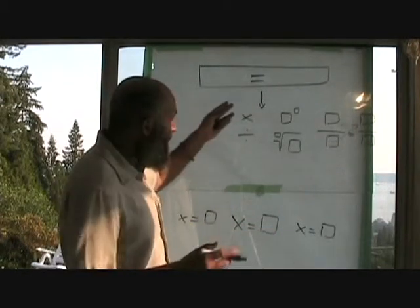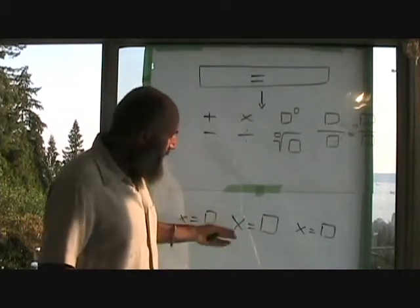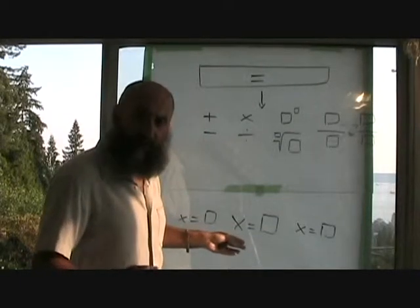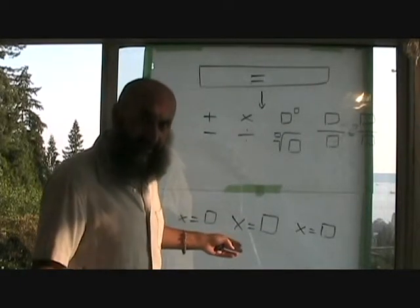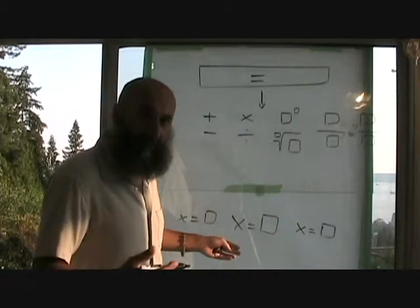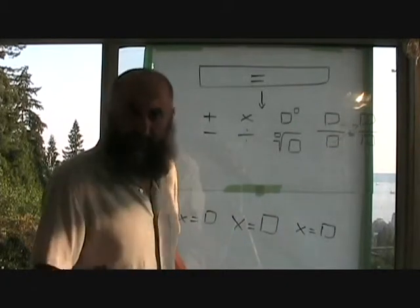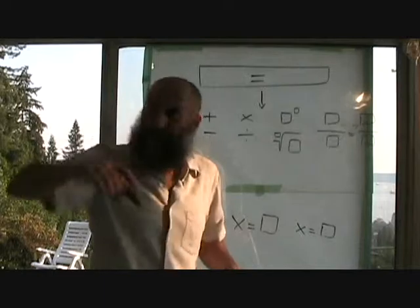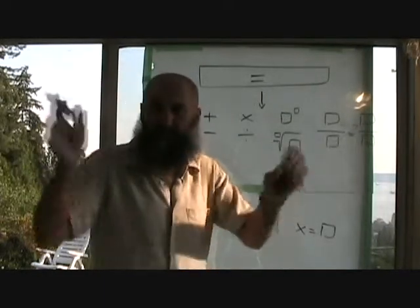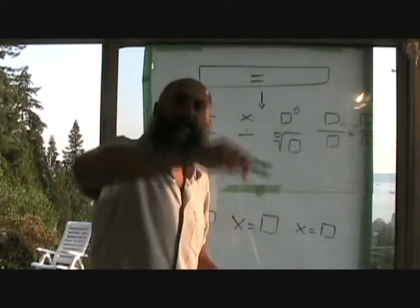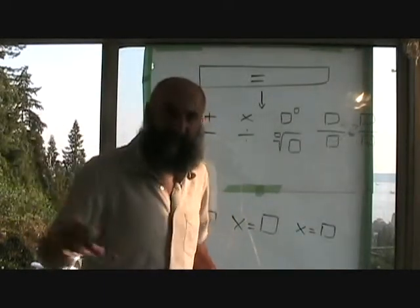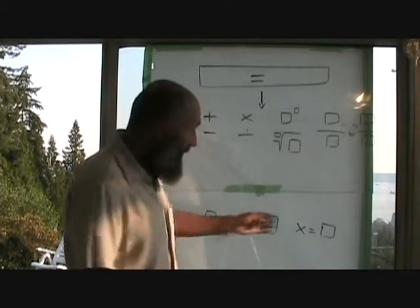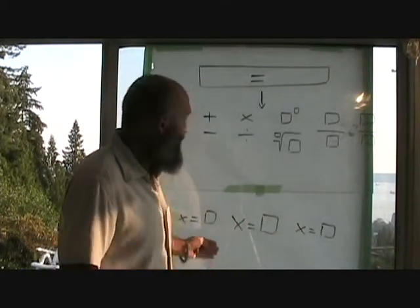If you remember, we talked about this — solutions are basically where the function crosses the x-axis, where y is equal to zero. A complex function — it would make sense — if a function is doing all types of weird curves and asymptotes, it'll probably cross the x-axis more than just once or twice. It might cross it multiple times.